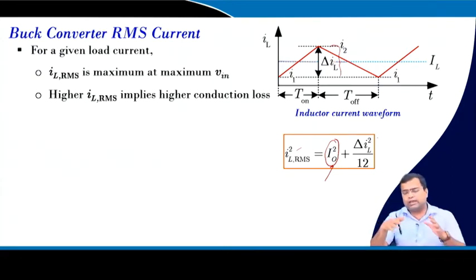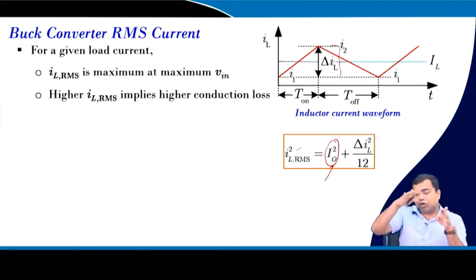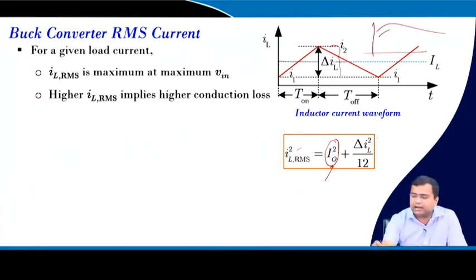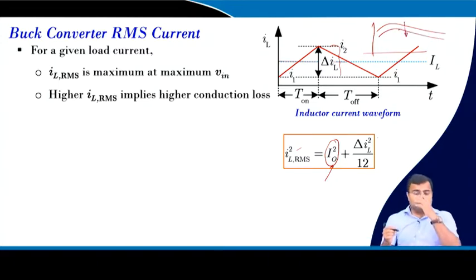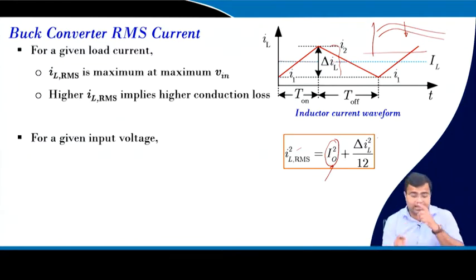In commercial efficiency curves, you will find the efficiency slowly reduces at higher input voltage. This is because higher input voltage causes more conduction losses, and switching losses also increase with higher input voltage.